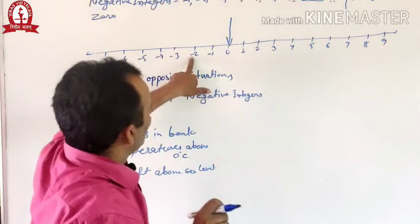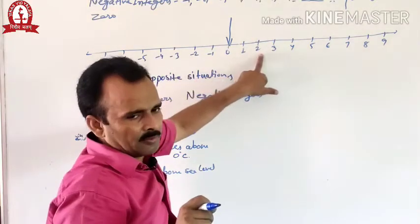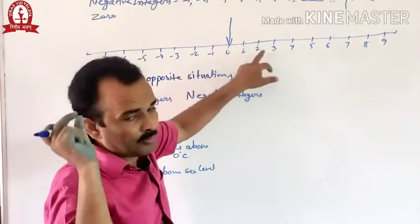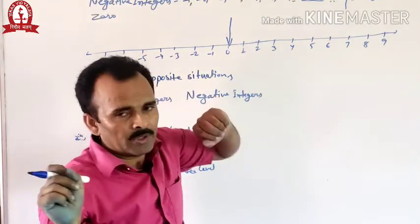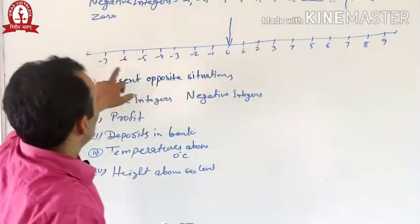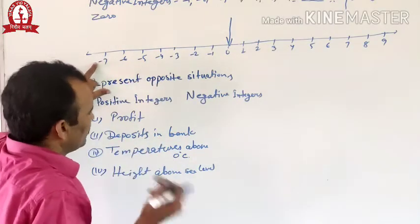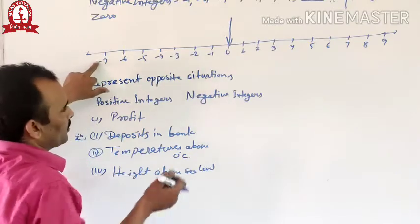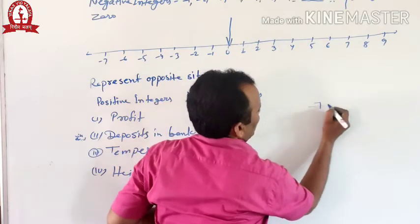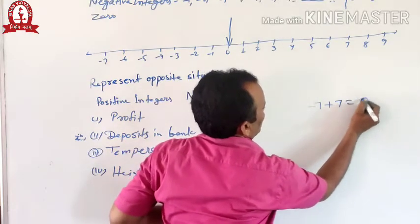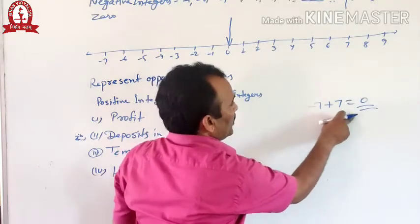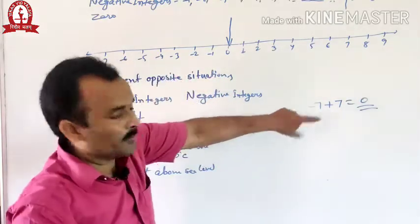Opposite means when we add both numbers, the sum is zero. If the sum of two numbers is zero, then the numbers are opposite to each other. For example, the opposite of minus seven is plus seven — when we add minus seven and plus seven, the result is zero.